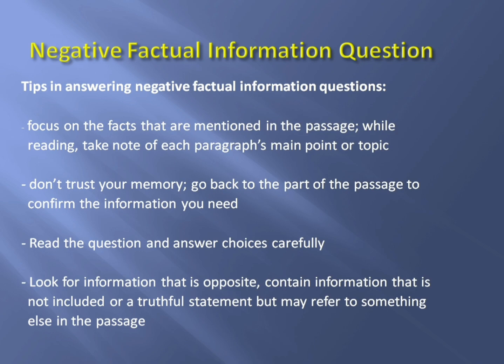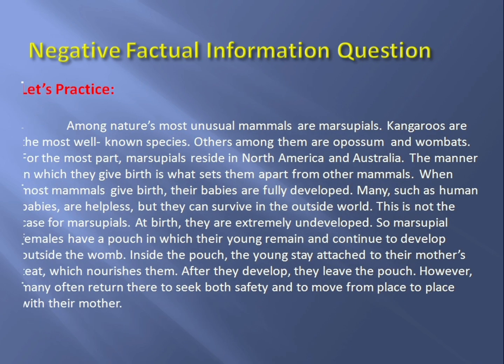So let us try to use the tips I gave you in answering a Negative Factual Information question. Here is a part of a reading passage: 'Among nature's most unusual mammals are marsupials. Kangaroos are the most well-known species. Others among them are opossum and wombats. For the most part, marsupials reside in North America and Australia. The manner in which they give birth is what sets them apart from other mammals. When most mammals give birth, their babies are fully developed.'